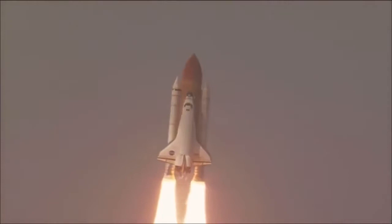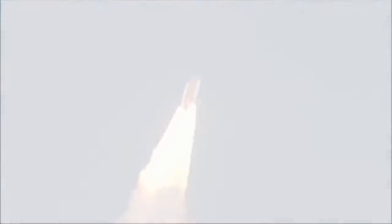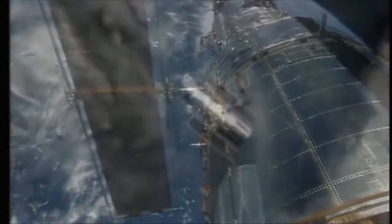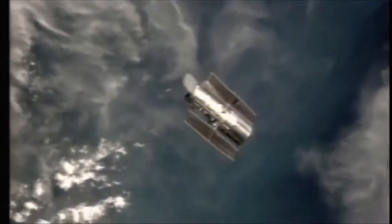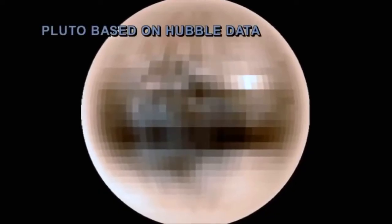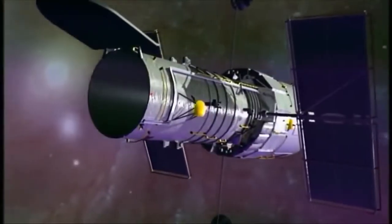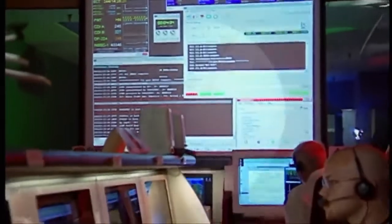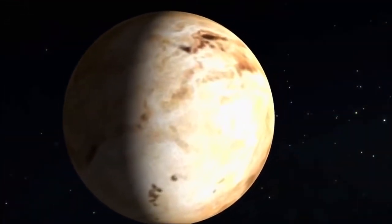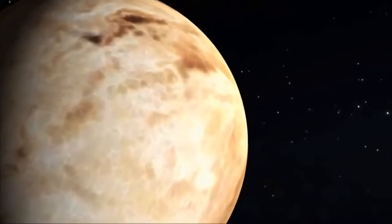It's a testament to modern technology that we know anything at all about the surface of Pluto. We can hardly see this thing. Even with the Hubble Space Telescope, we get maybe four pixels across, maybe 12 pixels total. But even with that, we see that parts of Pluto are as dark as coal and parts of Pluto are as bright as snow.